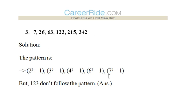Now third question: 7, 26, 63, 123, 215, and 342. There are two even numbers here and all other numbers are odd. So no previous pattern can be applied here.